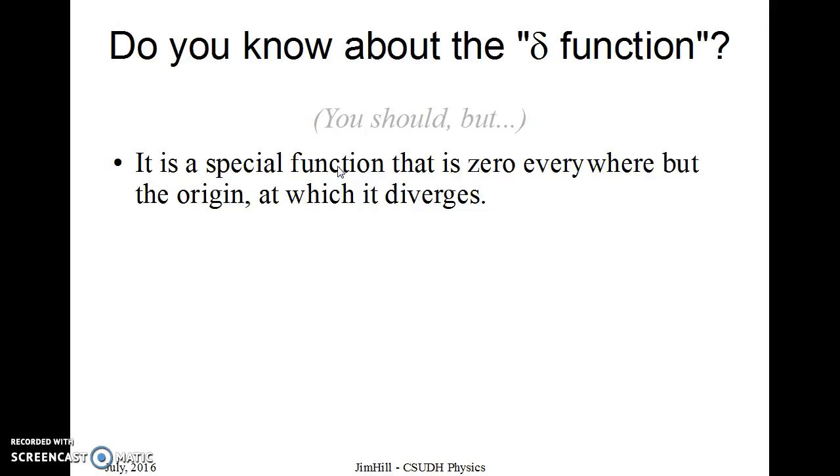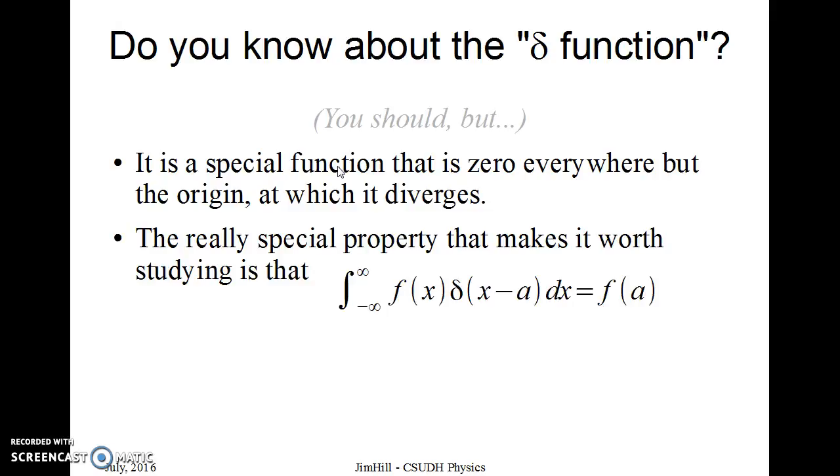This thing called the delta function, or the Dirac delta function, it's a special function that's zero everywhere except the origin at which it diverges. But it diverges in a very special way. The property that makes it worth studying is that the definite integral of another function times the delta function gives you the value at a specific point.